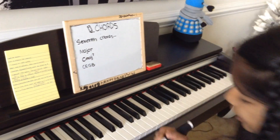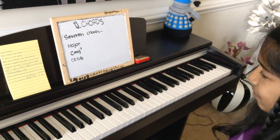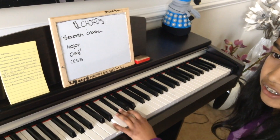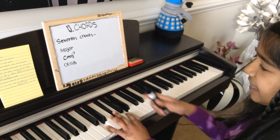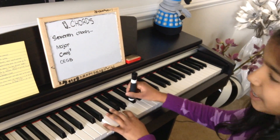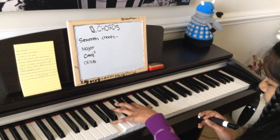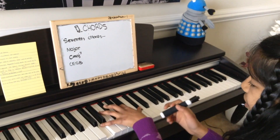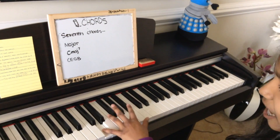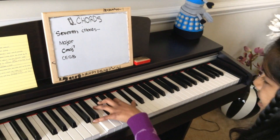Now let's try D major seven. You have your major chord, and since you have the seventh you take the seventh note of the D major scale, which is C sharp. So your D major seven would be D, F sharp, A, C sharp.